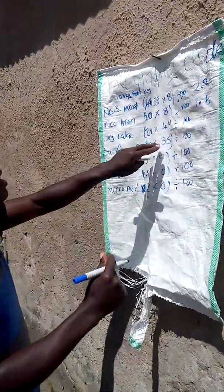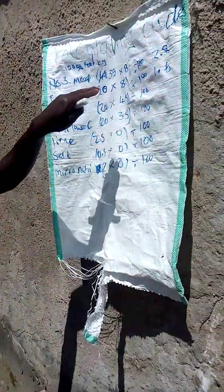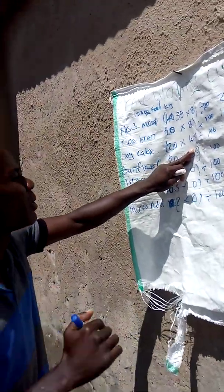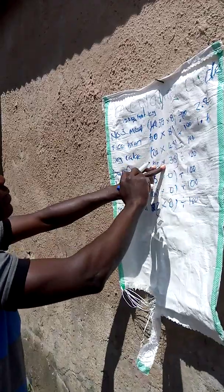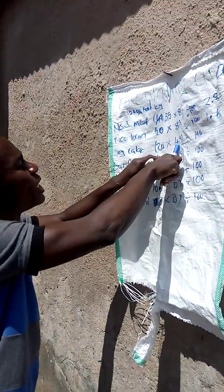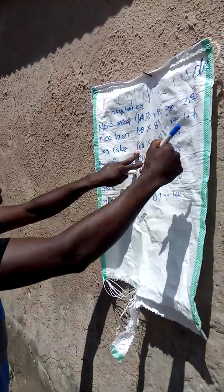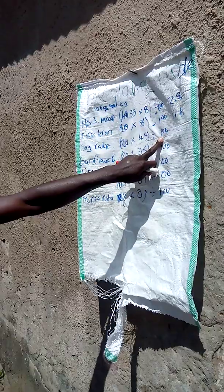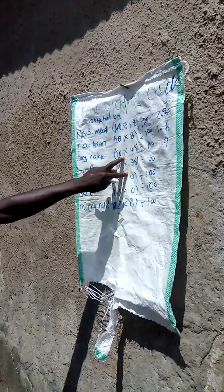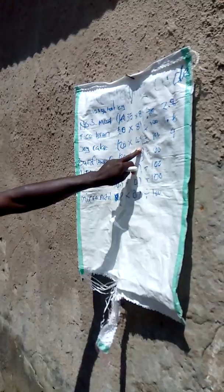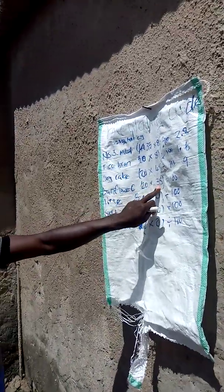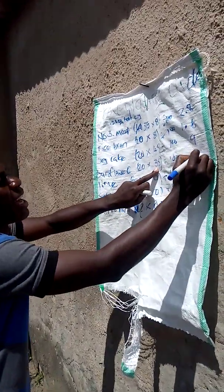For rice bran: 20 by 8 — since 20 times 4 is 80, 20 times 8 is 160. 160 divided by 100 gives me 1.6. For soya cake: 20 by 45 — 20 times 40 is 800, 20 times 5 is 100, so total is 900. 900 divided by 100 gives me 9. Then for sunflower cake: 20 by 35 — that gives me 700. 700 divided by 100 is 7.